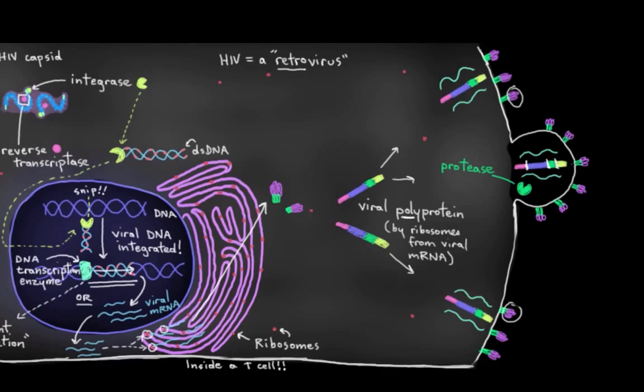So, it snips it at a few different sites and we end up with all the components that an HIV particle needs to infect. So, for example, this might be its reverse transcriptase here. And this might be its integrase here. And so on.